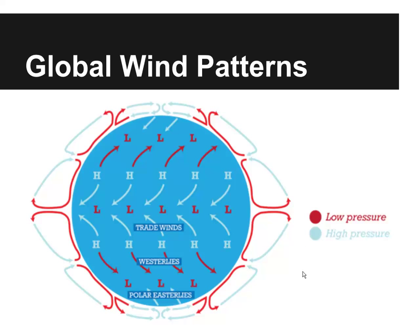Here's a diagram of those global wind belts or global wind patterns. We have high pressure in this area, low pressure here, and low pressure around the equator. These are what are called the trade winds, these are called the westerlies, and these are what are known as the polar easterlies. We're up here in the northern hemisphere, and so we actually have westerlies where we're at.